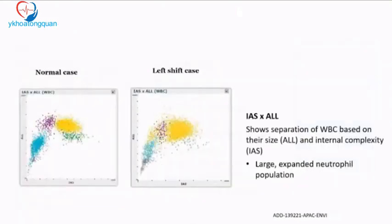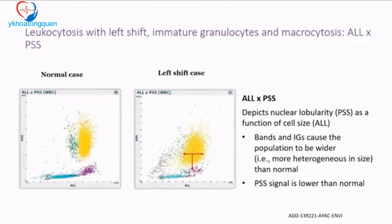Looking at the scatter plots from the analyzer, the left-hand side shows a normal case and the right side shows the left shift case. The IAS — internal complexity scatter — provides WBC separation based on size. The yellow neutrophil population is markedly expanded in the left shift case. The PSS scatter depicts nuclear lobularity as a function of cell size; bands and IG cause the population to be wider and heterogeneous, with a signal lower than normal.